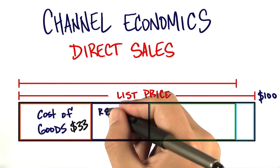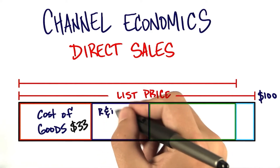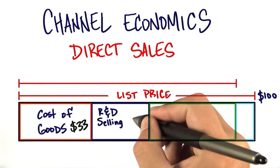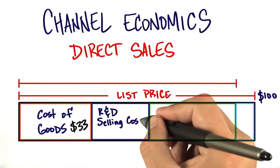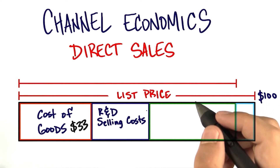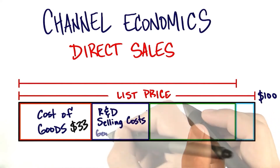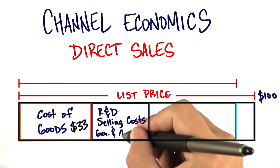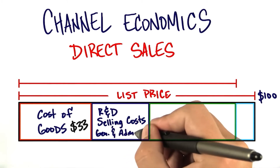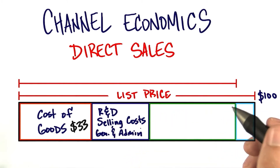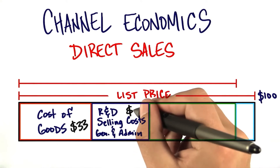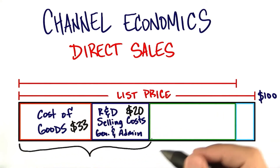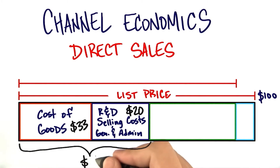Next, let's take a look at the costs of my R&D — that is my engineering — the cost of my direct sales people, maybe commissions or direct sales compensation, and then general and administration costs: what it costs me to have leases and lunches and free snacks. That might be another $20. So right now it's $53 just to keep the lights on in my building.